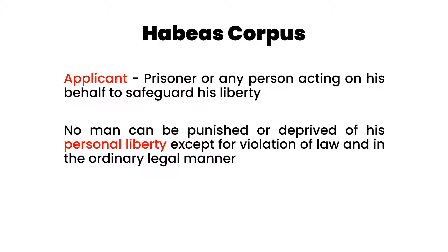The writ of Habeas Corpus can be enforced by producing that person before the court — the court has the right to have a person or have a body who has been detained without any legal justification. For Habeas Corpus, either a prisoner who has been detained or confined, or any other person acting on his behalf to safeguard his liberty — such as his legal practitioner or advocate — can apply. Habeas Corpus is based on the concept that no person should be deprived of personal liberty except for violation of law and in ordinary legal manner.